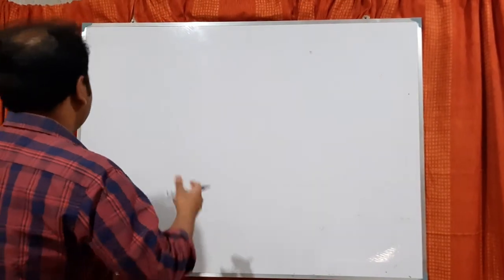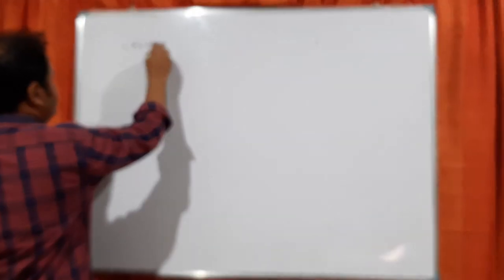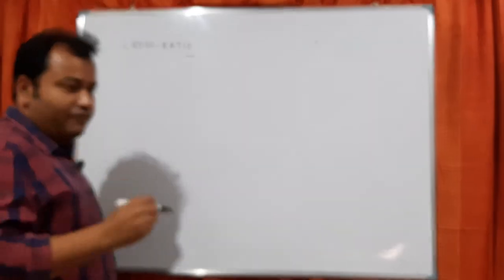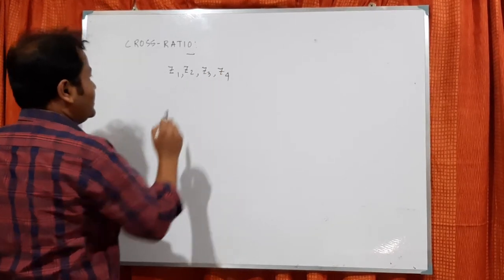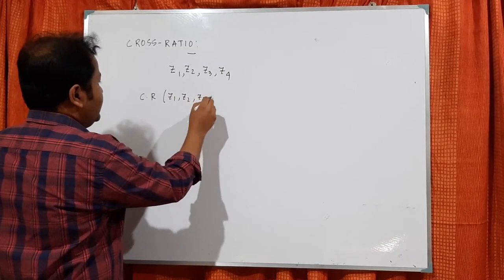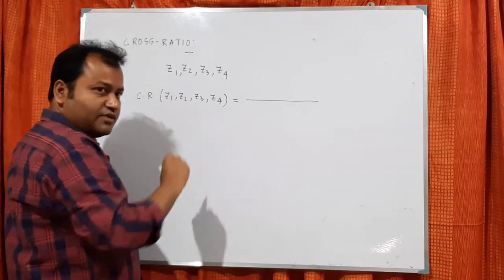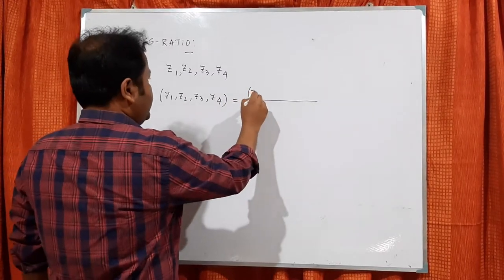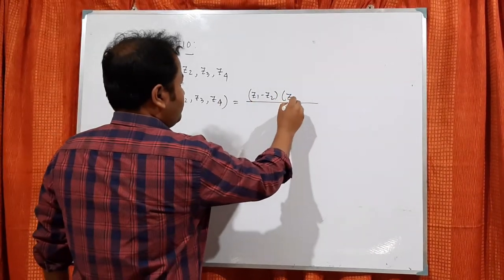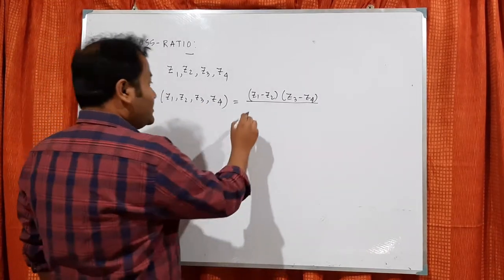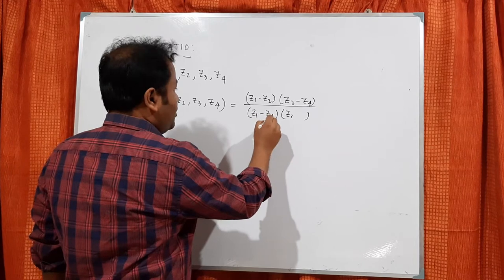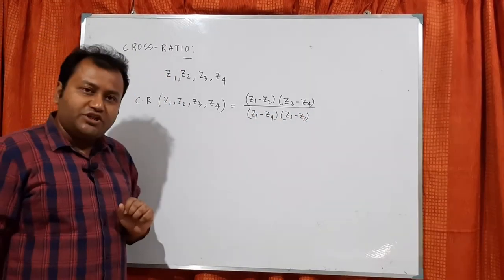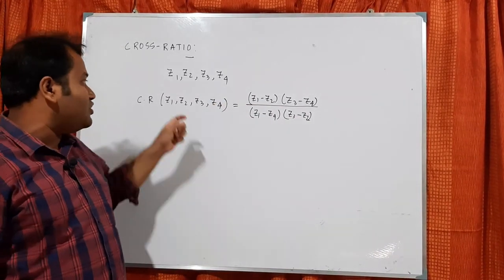The first idea today will be cross ratio. The definition of cross ratio is: if there are 4 complex numbers z1, z2, z3, z4, then the cross ratio — sometimes denoted by c.r. of (z1, z2, z3, z4) — is defined as (z1 minus z2)(z3 minus z4) divided by (z1 minus z4)(z3 minus z2). The order is very important. This quantity is called the cross ratio of 4 complex numbers.